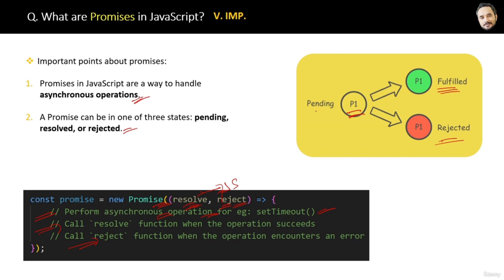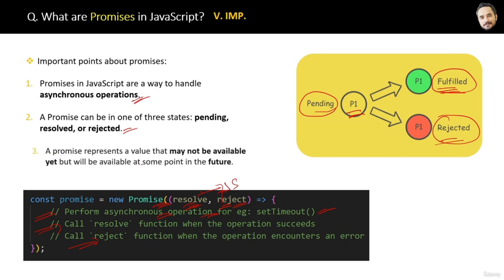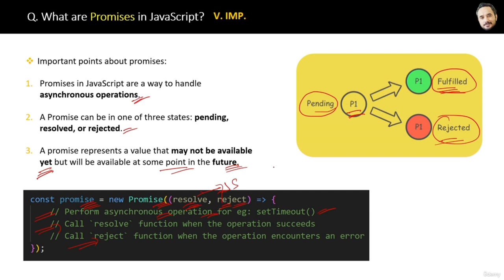When the promise is running it is in a pending state; after getting the result it will be either resolved or rejected. The last point is: a promise represents a value that may not be available yet but will be available at some point in the future — meaning you will surely get the result, either success or failure with some reason. Promise me you will never forget this!